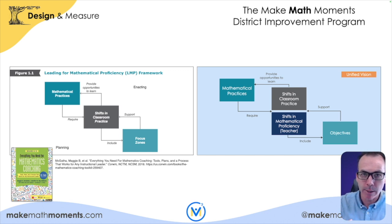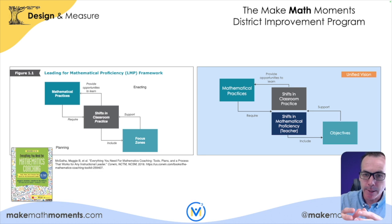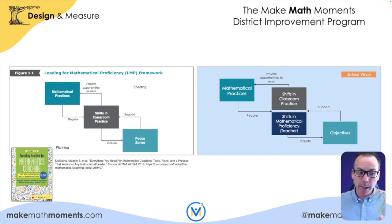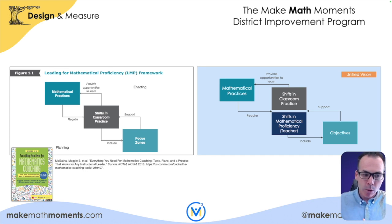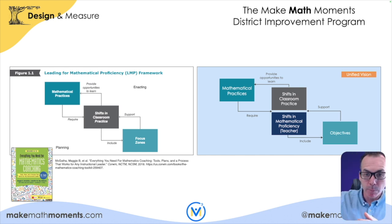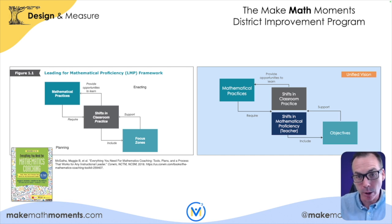We don't want to focus on too many objectives. We focus on some, and then turn those objectives back to support on mathematical proficiencies for teachers, which helps with shifts in instructional practice, which then provides those opportunities for students to learn — that's the order we have to do this in. We do need to help our teachers develop their own proficiencies in mathematics. For example, if it's multiplying, put the calculator away and put the standard algorithm and stacking away — have teachers multiply using the strategies and models we want their students to engage in. We have to give them opportunities to engage in that learning themselves, which will inspire them to do it in the classroom.